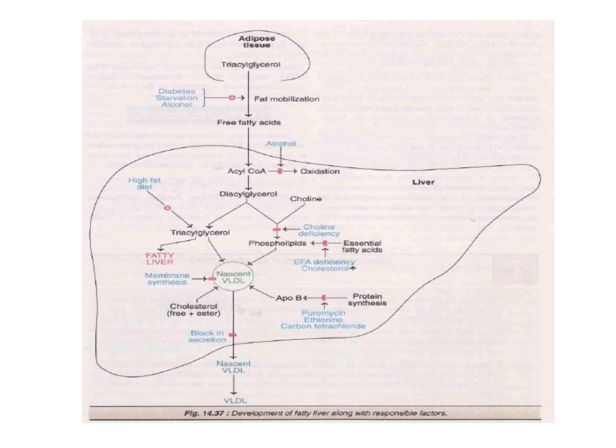These are the general overview of the development of fatty liver along with responsible factors. In adipose tissue, triacylglycerol is converted into free fatty acids. In cases of type 2 diabetes, starvation, and alcohol, fat mobilization increases, raising the chances of fatty liver. Free fatty acid is converted into acyl-CoA, and acyl-CoA is then oxidized — however, alcohol inhibits the oxidation of acyl-CoA.